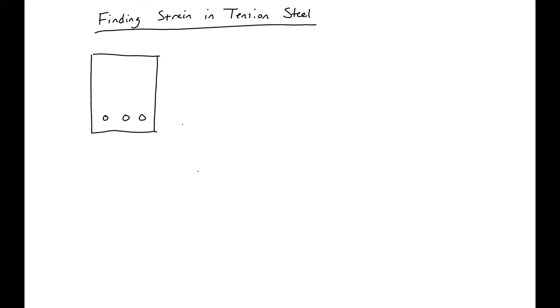When finding our nominal strain, we made the initial assumption that our tension steel yields. So we need to check this assumption. We initially assumed that our Fs equals our Fy, so we need to check this assumption.